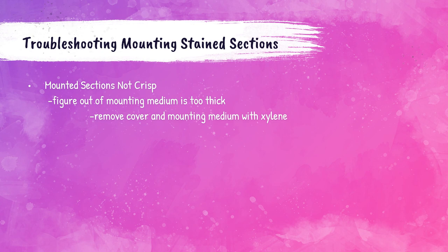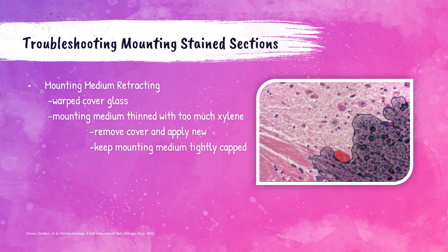If mounted sections are not crisp under the microscope, check whether the mounting medium is too thick. If so, remove the cover glass and mounting medium with xylene and remount. Sometimes the mounting medium retracts from the edge of the cover slip — as shown in the example photo with the cover slip pulling up from the lower right corner. This is most often caused by a warped cover slip or overly diluted mounting medium. To correct this, remove the cover slip and mounting medium with xylene and apply a new one. Keep the cap on the mounting medium tight to prevent dilution.